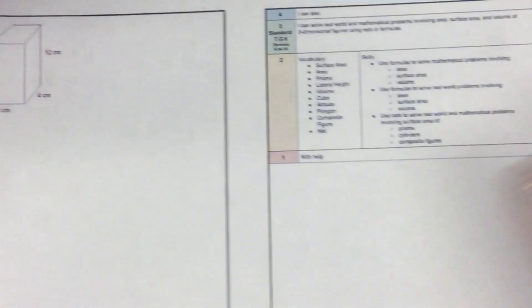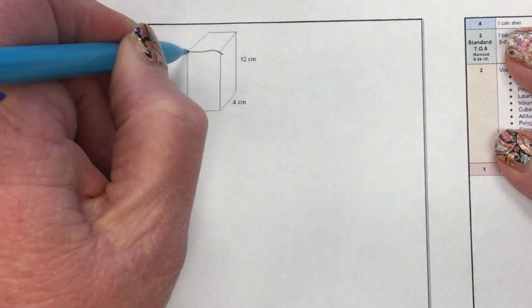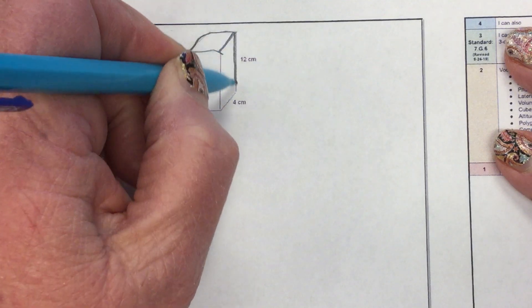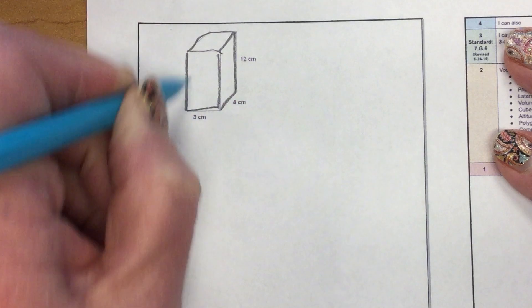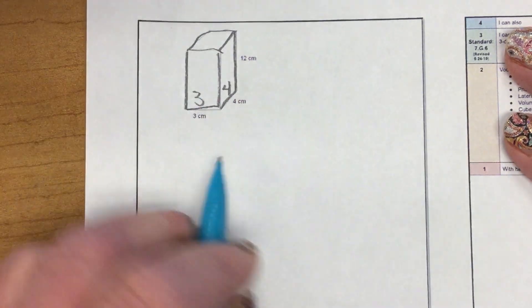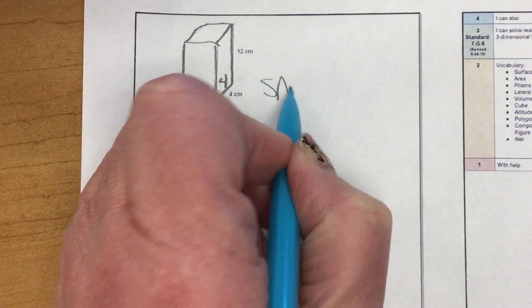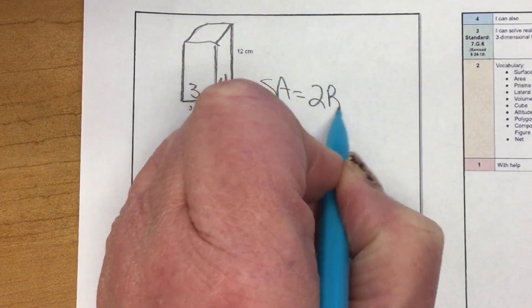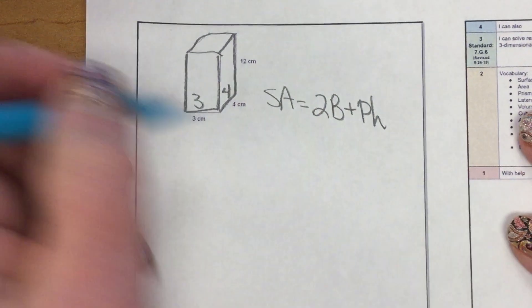So here we go. We've got a lovely rectangular prism. Kind of hard to see. I'm going to make it a little darker. This side is three, this is four, and this is 12. Now, surface area equals 2B plus pH. We always start with our formula.